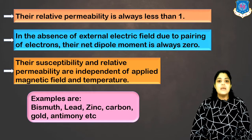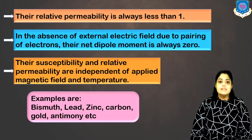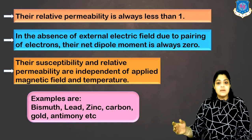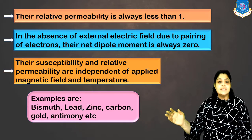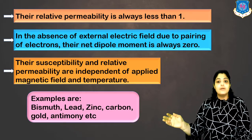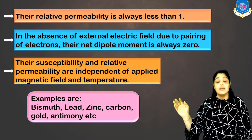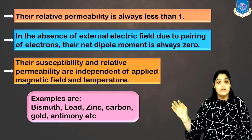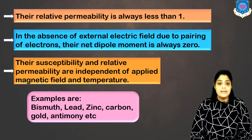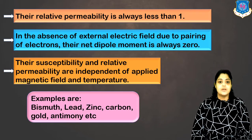Some examples of diamagnetic materials are bismuth, lead, zinc, copper, carbon, gold, antimony, etc.